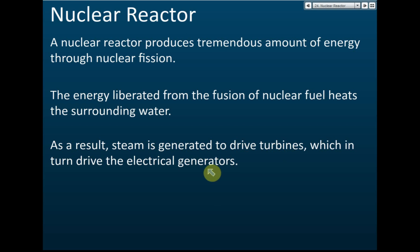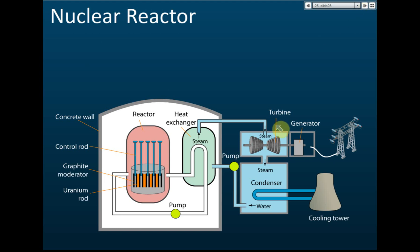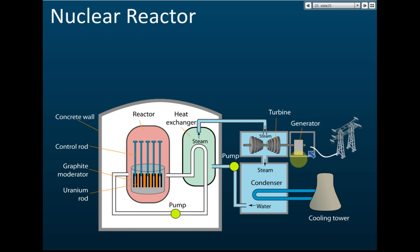Here is an illustration of the nuclear reactor. We can see there are three parts. The reactor is inside a concrete wall. Inside this concrete wall we have the nuclear reactor, and then we have a turbine with a generator to produce electricity.